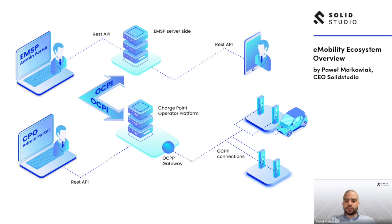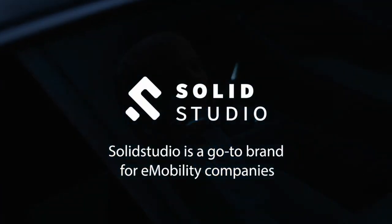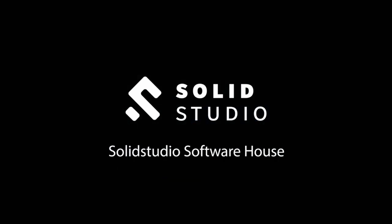This covers the digital ecosystem from a high level. We need to remember that I described a relatively closed ecosystem — there is also the possibility to link different EMSPs to different CPOs via peer-to-peer OCPI connectivity, and other ways like hub integrations as well. If you have any questions, please do not hesitate to contact us, and find the link to this slide in the description. Thanks a lot — Solid Studio is the go-to brand for e-mobility companies.